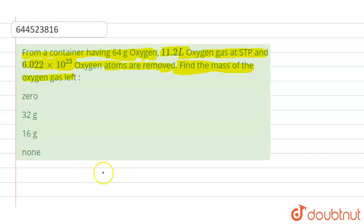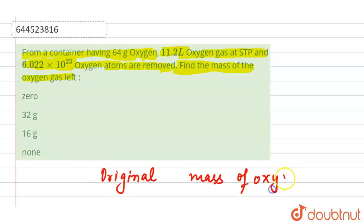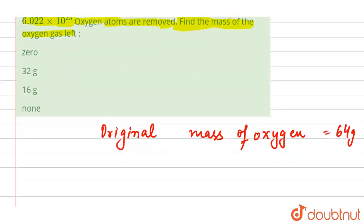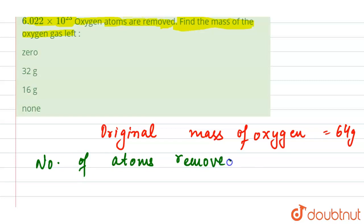In the question, we are given the original mass of oxygen in the container, which is 64 grams. The number of atoms removed is 6.022 × 10²³ atoms.